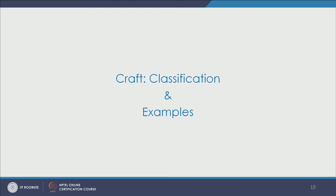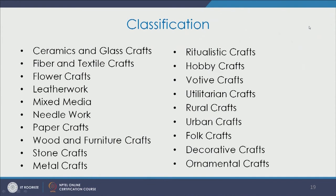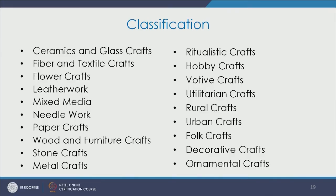Let us focus now on the varied classification of craft and certain examples that will help us understand what craft is about and where it is applied. Most of the time, crafts are defined through varied materials — which is a very practical way of classifying craft — because there is always a role of material, associated skills, tools and techniques. So it becomes very easy to understand craft in terms of material.